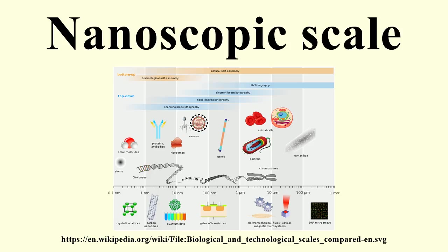On October 8, 2014, the Nobel Prize in Chemistry was awarded to Eric Betzig, William Moerner, and Stefan Hell for the development of super-resolved fluorescence microscopy, which brings optical microscopy into the nanodimension.